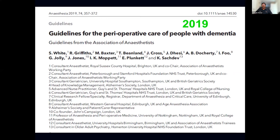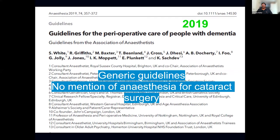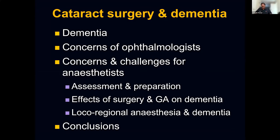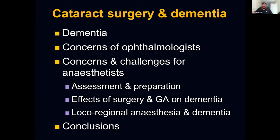I have four main headings: what dementia is and how it affects patients; what the concerns of the ophthalmologist are; the anesthetist's concerns — assessment, preparation, and the effects of surgery and general anesthesia on dementia; whether regional anesthesia is preferable; and conclusions. In terms of dementia, the definition is important: it is a group of symptoms involving slow and progressive loss of cognitive function. The key word is progressive — it does not improve without some newer active treatment.